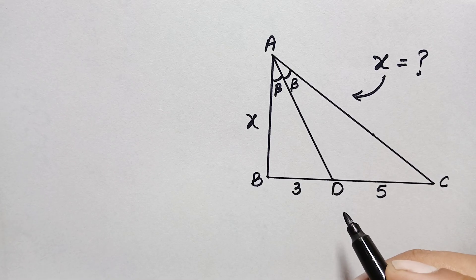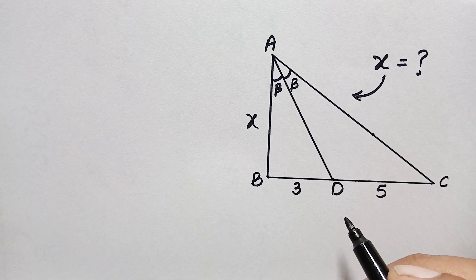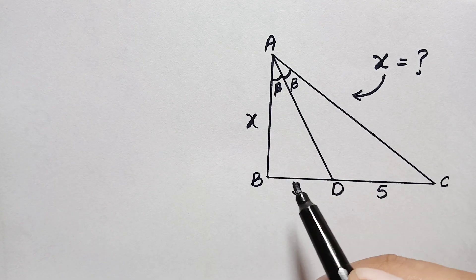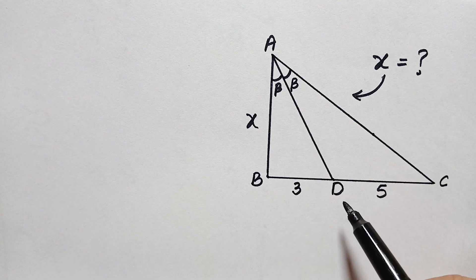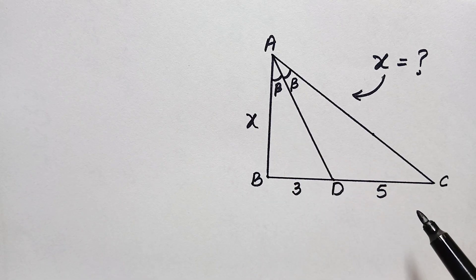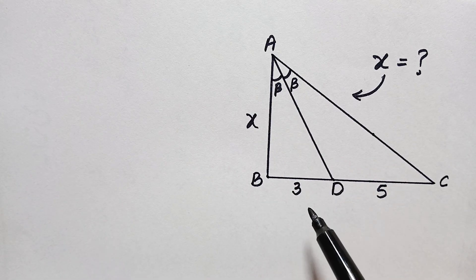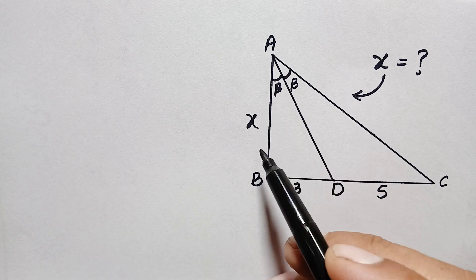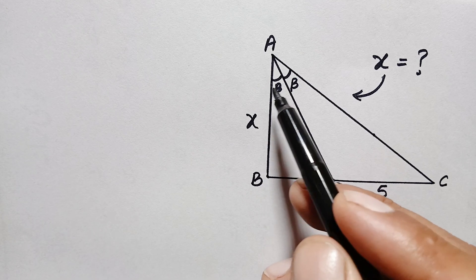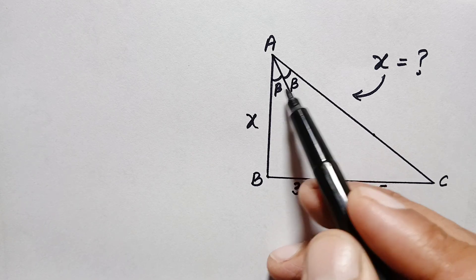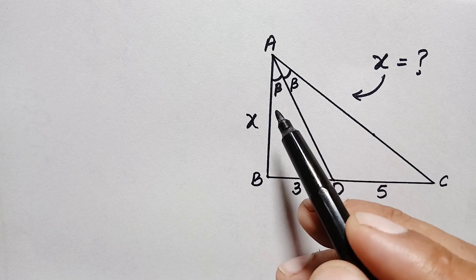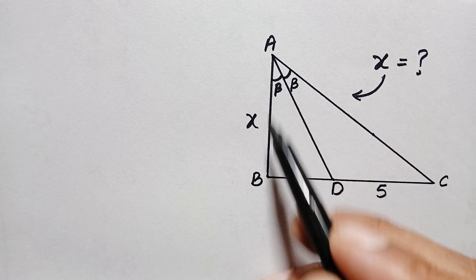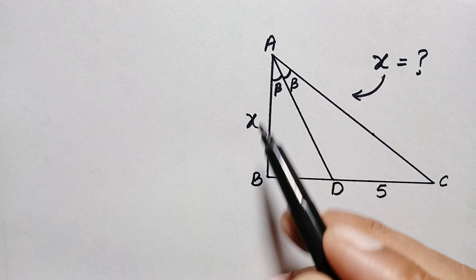Hello everyone, welcome. Today we have a new geometry math problem. We have a right angle triangle where there are two sub-triangles: triangle ABD and triangle ADC. The base of this bigger triangle is 3 plus 5, which is 8 units, and its height and perpendicular is 8 units. There are two angles given in the sub-triangles which are equal to beta at point A. Our target is to find the value of x, the height and perpendicular of this right angle triangle ABC.